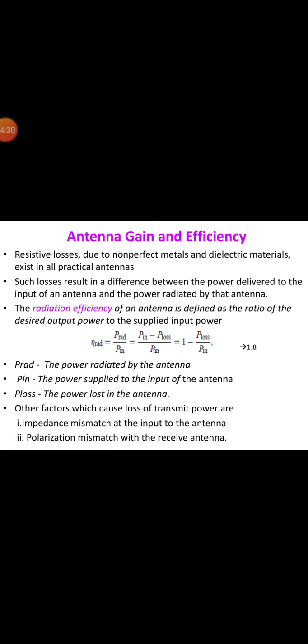The resistive losses due to non-perfect metals and dielectric materials exist in all practical antennas. Such losses result in a difference between the power delivered to the input of the antenna and the power radiated by the antenna. The radiation efficiency of an antenna is defined as the ratio of the desired output power to the supplied input power. Eta radians equals P radians by P in, which can be written as P in minus P losses by P in, equals 1 minus P loss by P in.